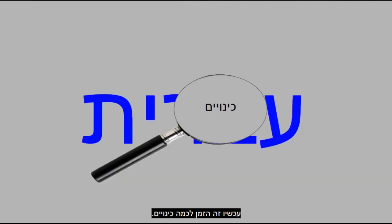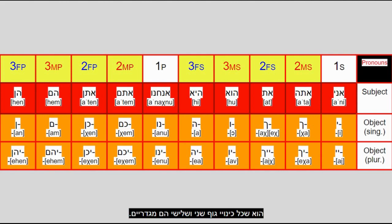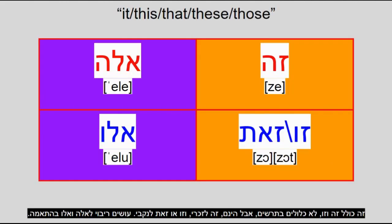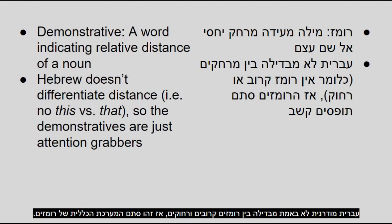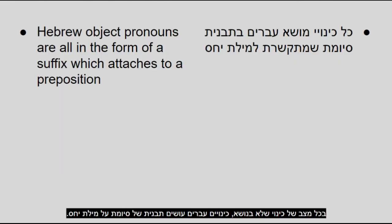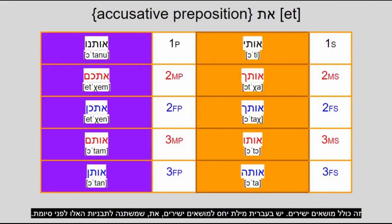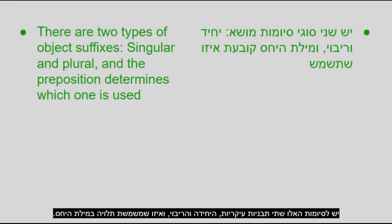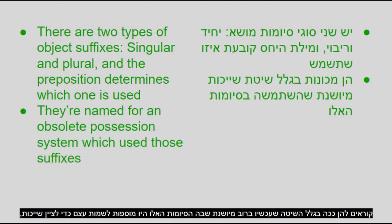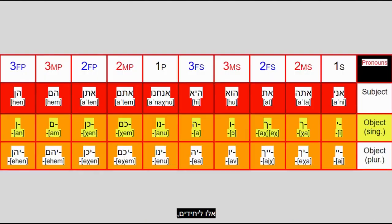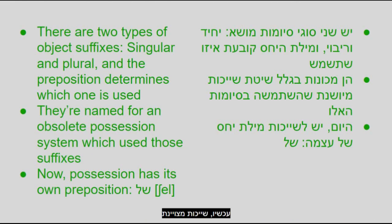Now for pronouns. The notable thing about Hebrew pronouns is that all second and third person pronouns are gendered. The words for 'it' are 'ze' for masculine and 'zo' or 'zot' for feminine, pluralizing to 'ele' and 'elu' respectively. These are also demonstratives. Modern Hebrew doesn't really differentiate between near and far demonstratives. For object pronouns, Hebrew pronouns take the form of a suffix on a preposition — this includes direct objects. Hebrew has a direct object preposition 'et,' which transforms when suffixed. With non-pronouns, 'et' is only used when the direct object is definite. Nowadays, possession is indicated by the preposition 'shel.'